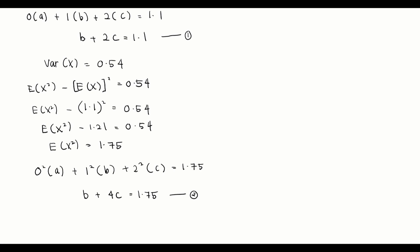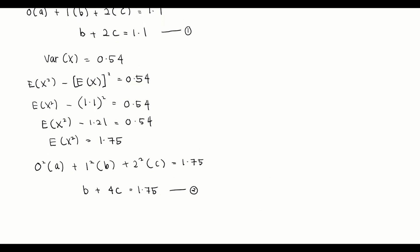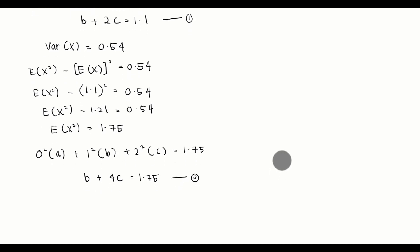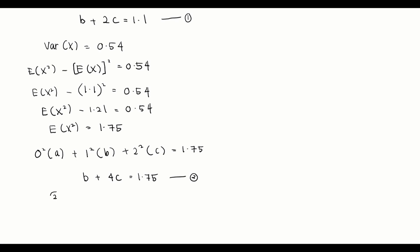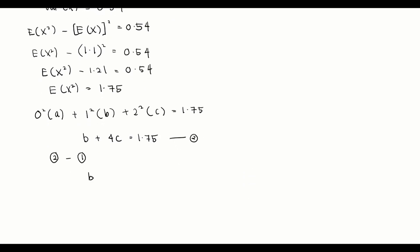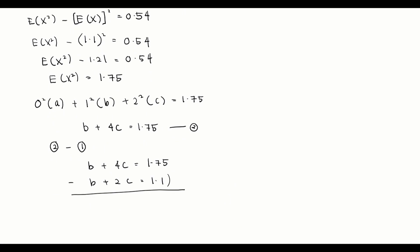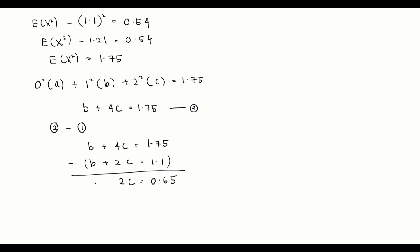We solve the two equations simultaneously using the elimination method. We take the second equation, b plus 4c equals 1.75, and subtract the first equation, b plus 2c equals 1.1. So b minus b is 0, 4c minus 2c is 2c, and 1.75 minus 1.1 is 0.65. Therefore 2c equals 0.65, giving us c equals 0.325.